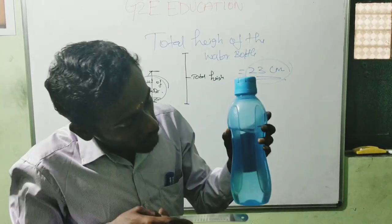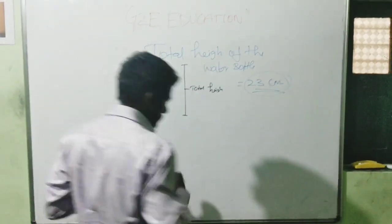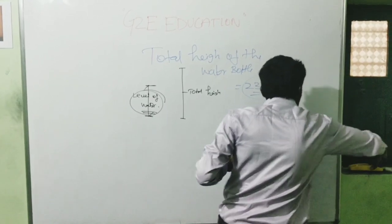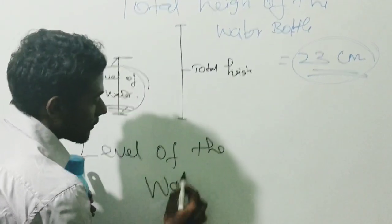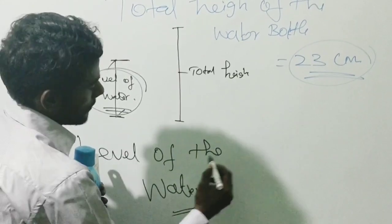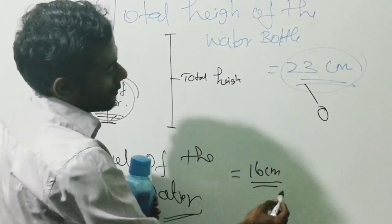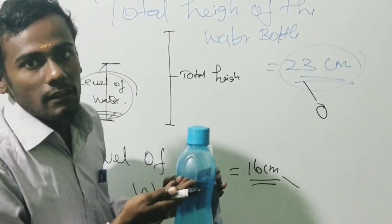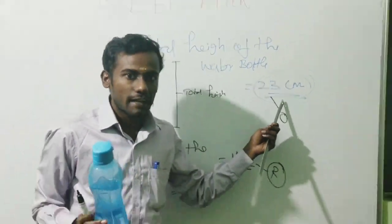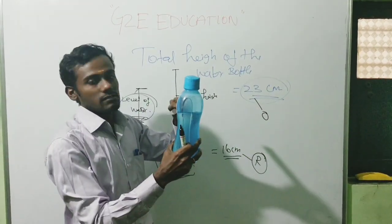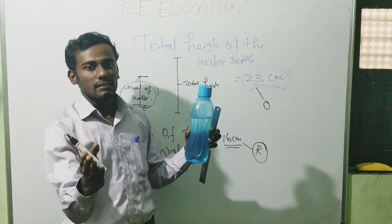Okay, from this level to this level is 16 centimeters. The level of the water inside the bottle is 16 centimeters — it is our reference. So there are two things: this is the total height, this is the reference height which we take as our reference. We have to find the percentage of the water inside the bottle.